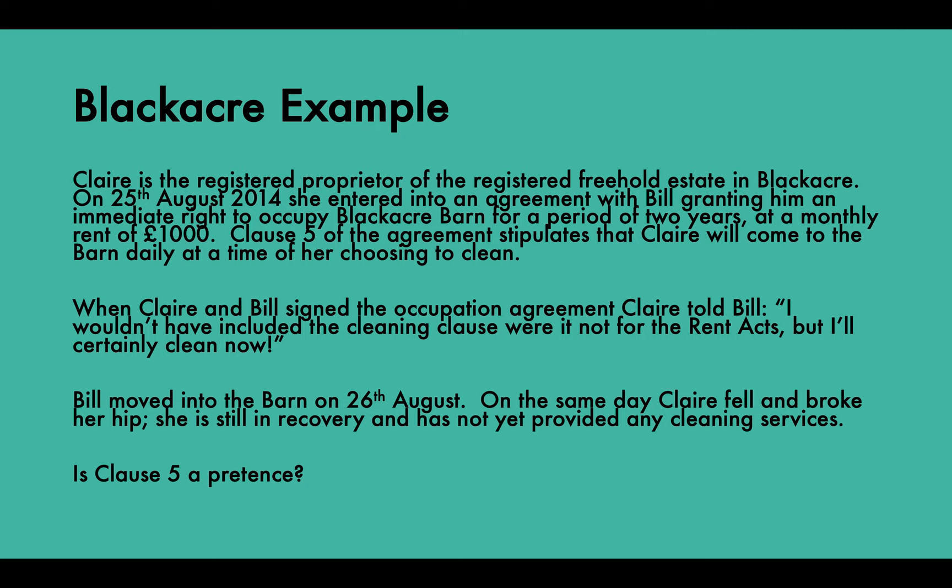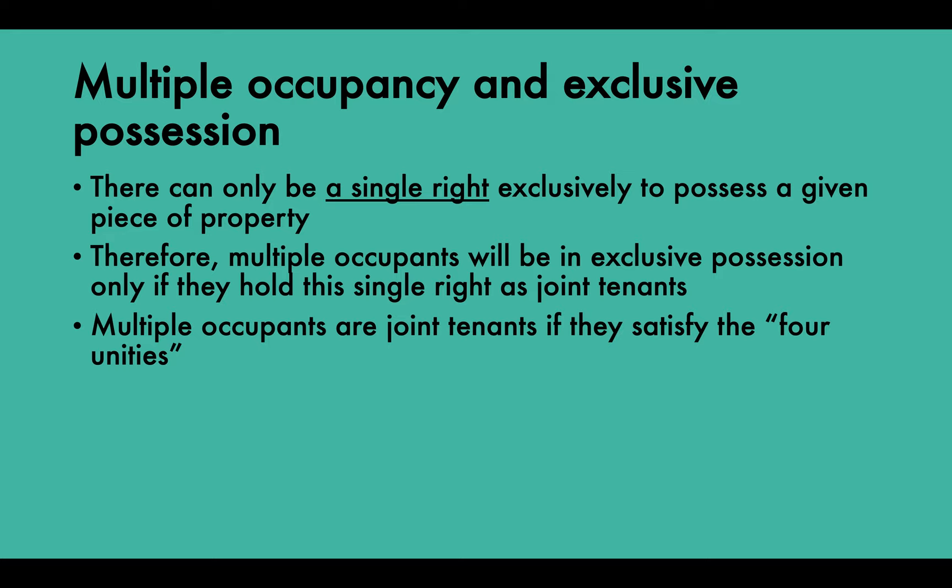On multiple occupancy and exclusive possession: there can only be a single right to exclusively possess a given piece of property. Therefore, multiple occupants will have exclusive possession only if they hold this single right as joint tenants. Multiple occupants are joint tenants if they satisfy the four unities.